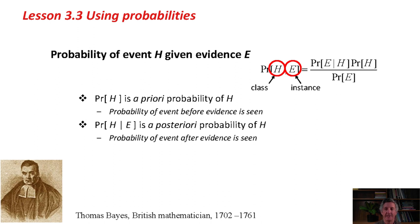The theorem is that the probability of H given E, the class given the instance, the hypothesis given the evidence, is equal to the probability of E given H times the probability of H divided by the probability of E.